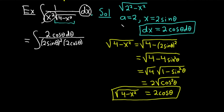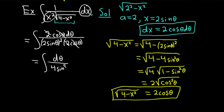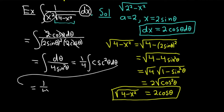Usually you get some really good cancellation, and we did here. This simplifies to d theta over 4 sine squared theta. Pulling out the 1/4, we get 1/4 times the integral of 1 over sine squared, which is cosecant squared theta d theta. Integrating cosecant squared gives negative cotangent, because the derivative of cotangent is negative cosecant squared. So we get negative cotangent theta.